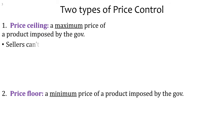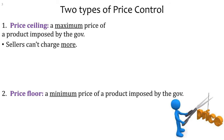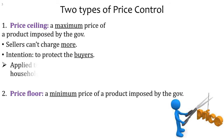In the case of the price ceiling, sellers cannot charge more — that's the maximum it can be. The purpose of such a law is probably to make sure that everybody can afford the product and they are not ripped off. The intention is to protect buyers so that sellers won't abuse them, and it's basically used for necessities to help low-income households.